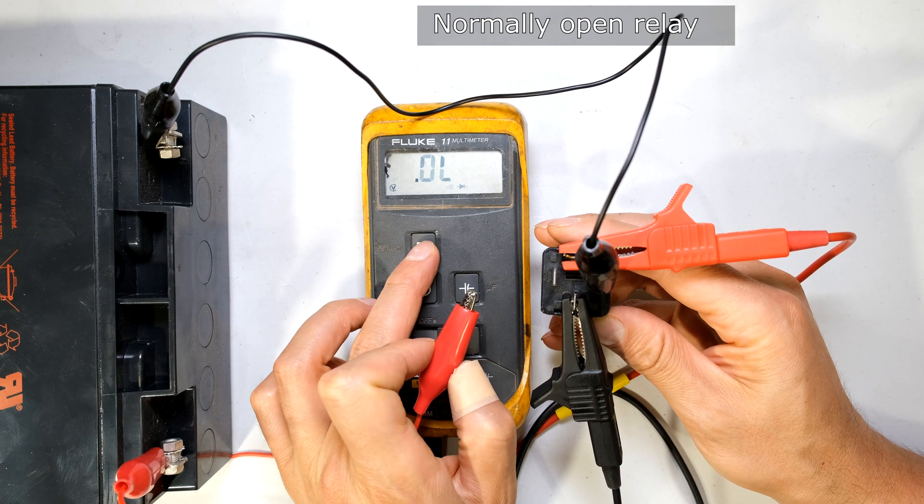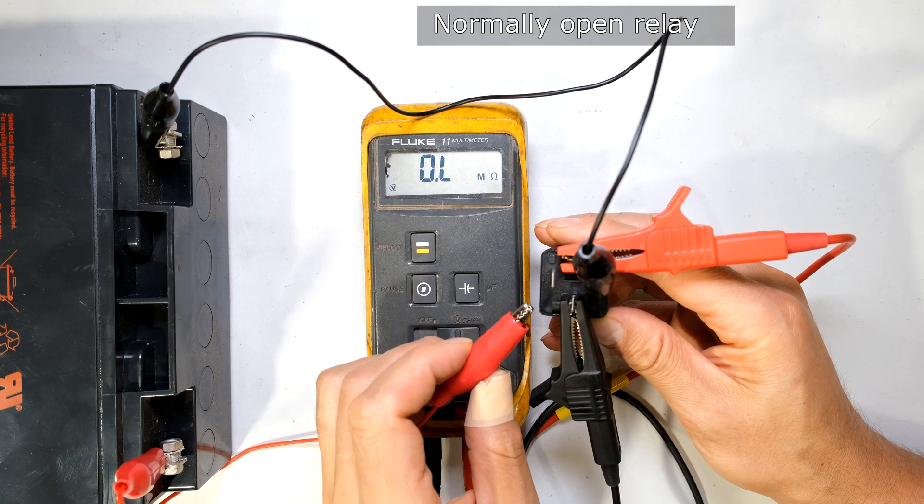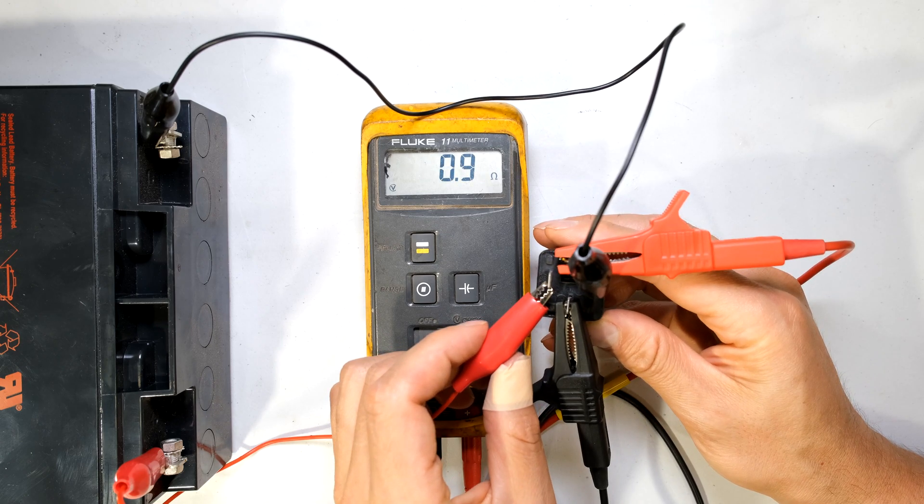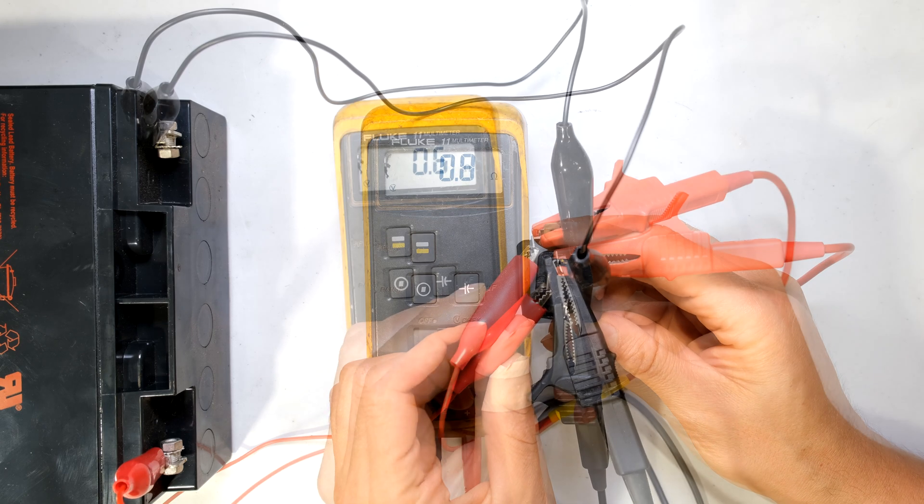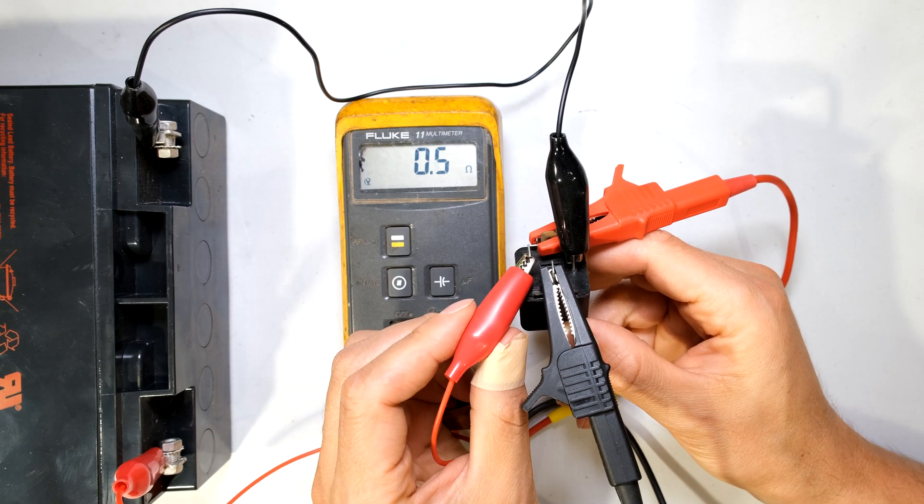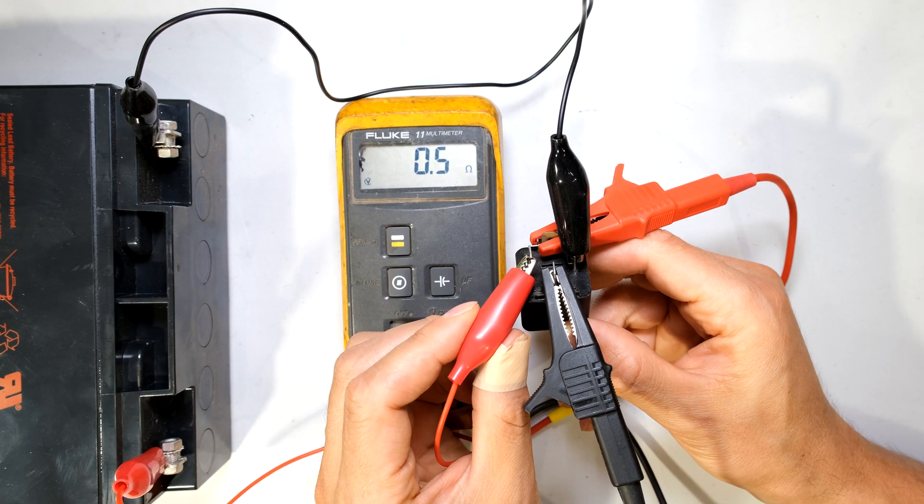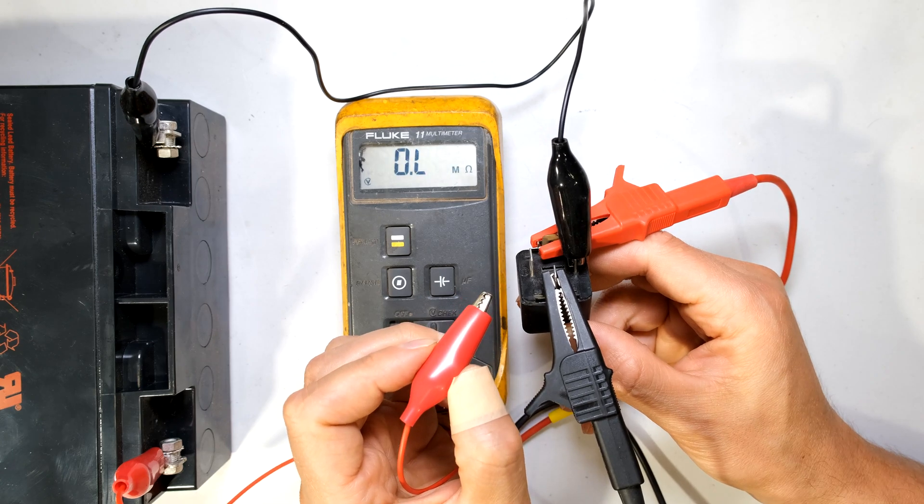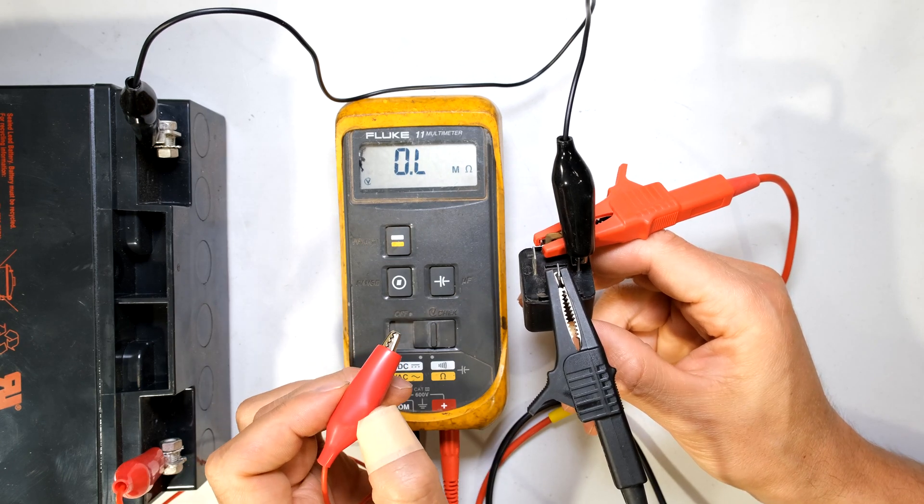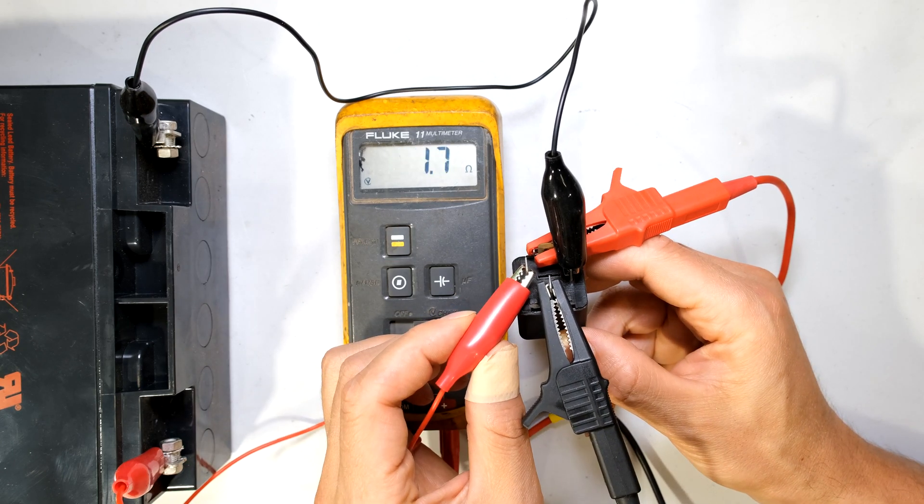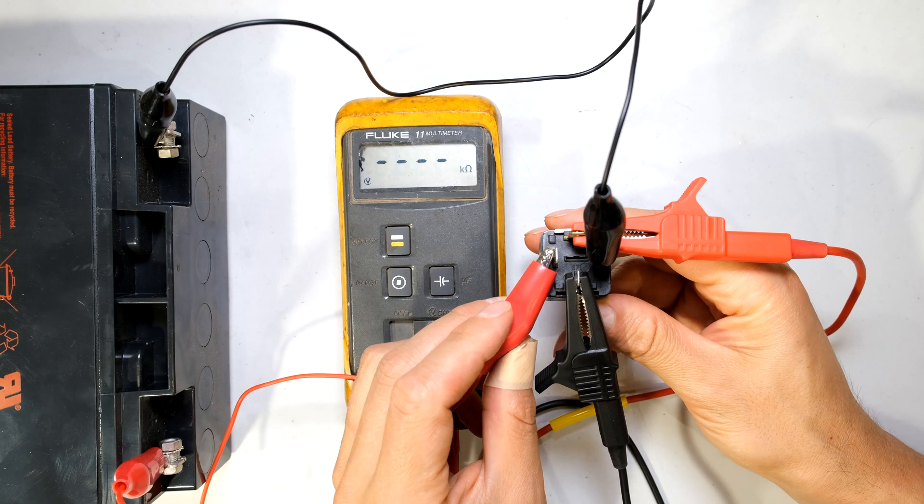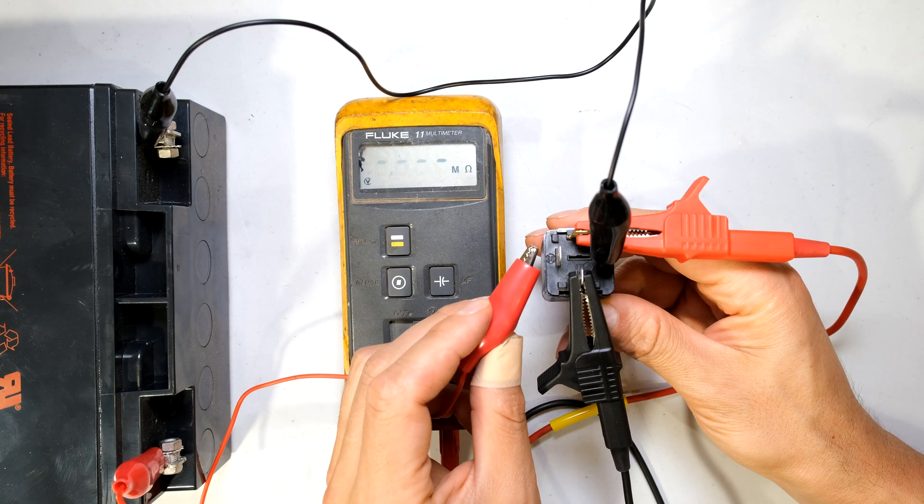If I now select the resistance you'll see that the resistance will be very low. Just less than one ohm. When I disconnect the battery from my relay it will open the circuit. Resulting in the resistance going very high. There you can see. Offline. Meaning open circuit. Closed circuit. Open. Closed circuit. Open circuit.